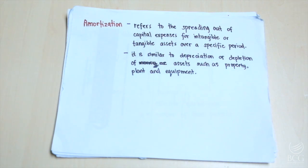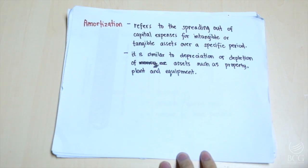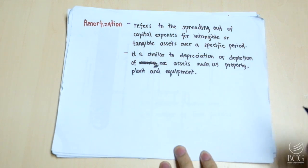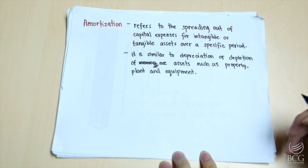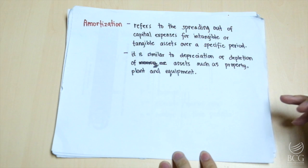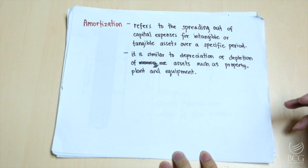In other words, amortization lets you know how much interest was incurred, how much money to pay or to receive, how much is the amortized cost, and what is the carrying value of the instrument.